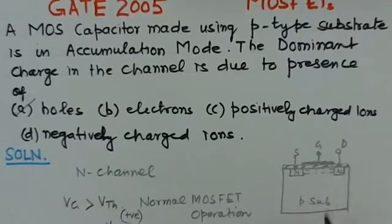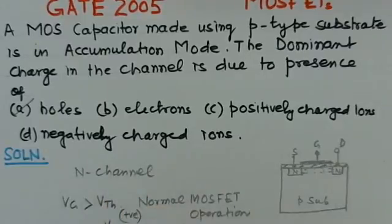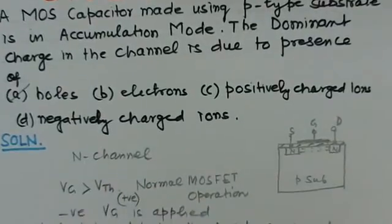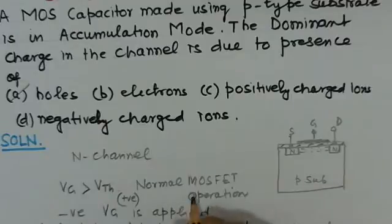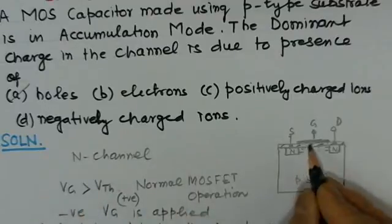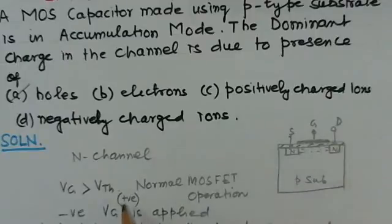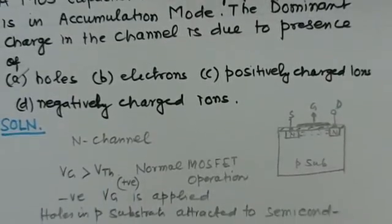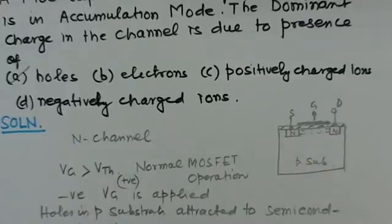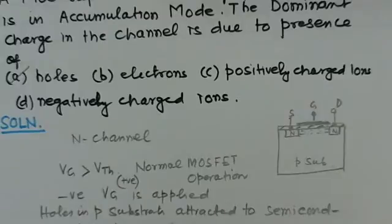So this is a normal n-channel MOSFET, and for the normal operation of the n-channel MOSFET, the gate voltage which is applied is of positive nature and it is greater than threshold. Then only the normal operation of MOSFET takes place. But here it is said that the MOSFET is operating in the accumulation mode.